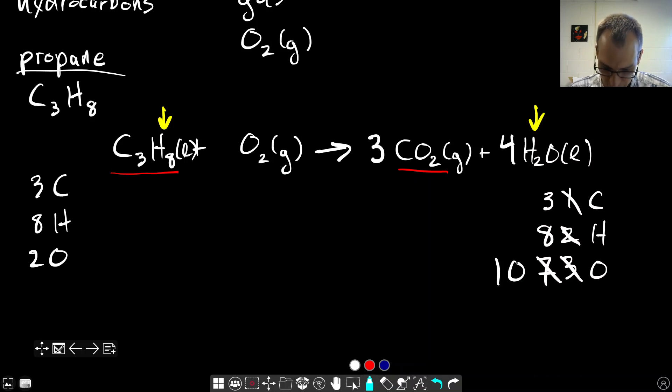We're close. Our carbon and hydrogen are balanced, but our oxygen still isn't. But thankfully, oxygen only shows up on the reactant side as O2. And so we can just add a five here and we get a balanced chemical equation because we now have ten oxygens.